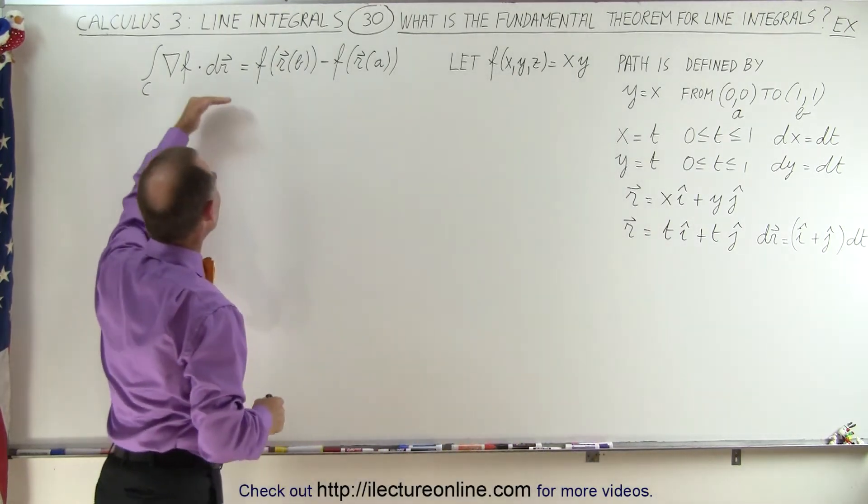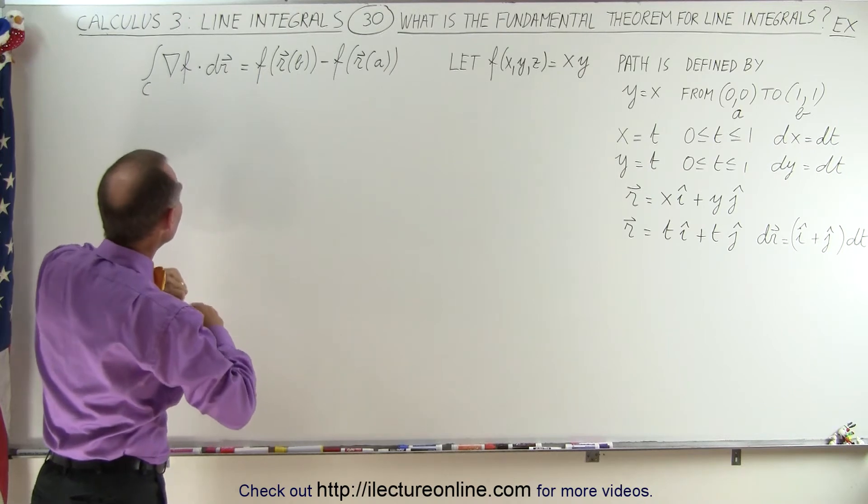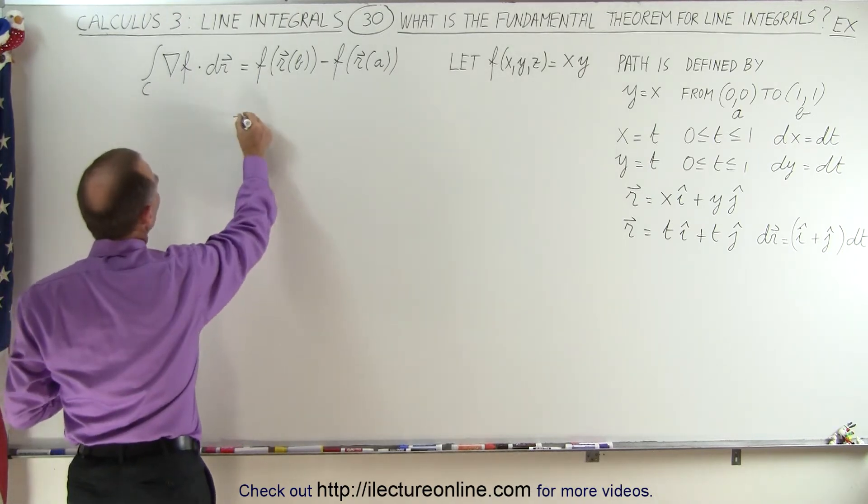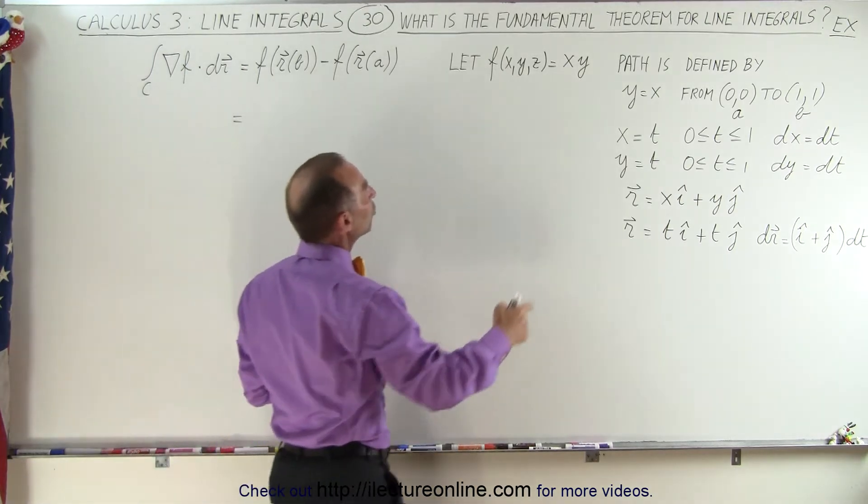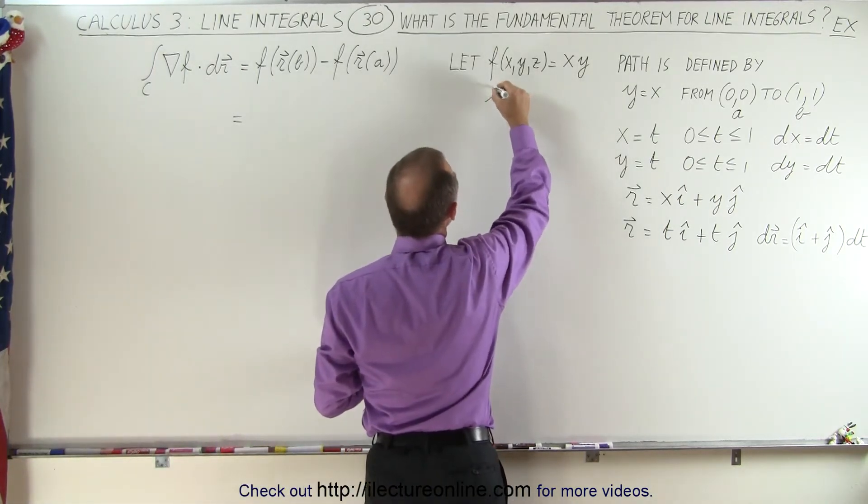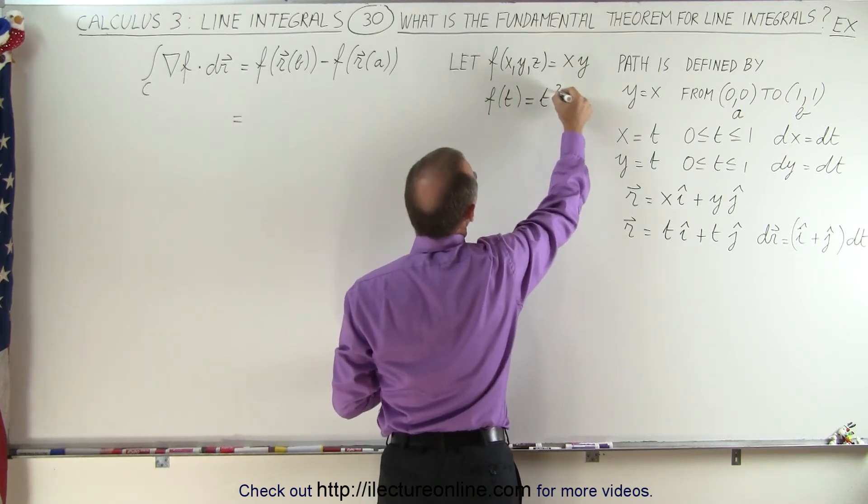So now we can go ahead and evaluate this line integral. So we can say that this is going to be equal to the function evaluated at b minus the function evaluated at a. But in terms of the parametric variable t, f of t is going to be equal to t squared.